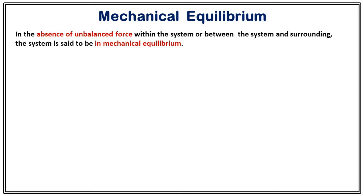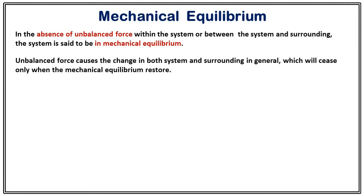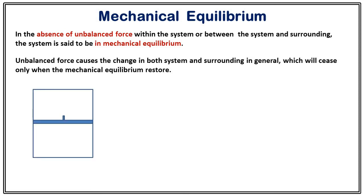What will happen if there is an unbalanced force? If an unbalanced force exists, both the system and surrounding will try to change, and this change will continue until a new mechanical equilibrium state is restored. For example, consider a gas inside a container fitted with a piston. If the system force Fs and the outside force Fo are not equal — say Fo is less than Fs — then Fs minus Fo is non-zero, so the system is not in mechanical equilibrium.